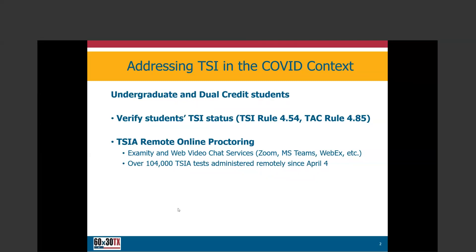When we talk about entering undergraduate students — high school completers and students still in high school wishing to qualify for dual credit — the first thing we want to do is verify a student's TSI status. TSI refers to the statute requiring all non-exempt undergraduate students to be assessed in reading, writing, and math for readiness to engage in college-level academic coursework, which also applies to dual credit students. In verifying TSI status, you look at TSI rule 4.54 for exemptions, and for dual credit students, rule 4.85.